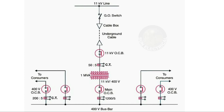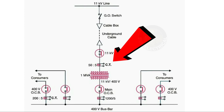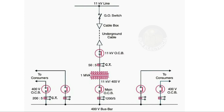We have a current transformer. The ratio is 15 to 5, meaning the input is 50 amps and the output is 5 amps.